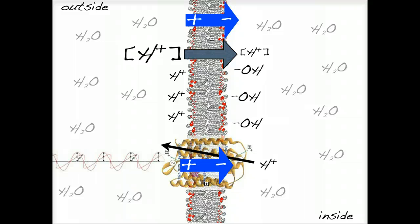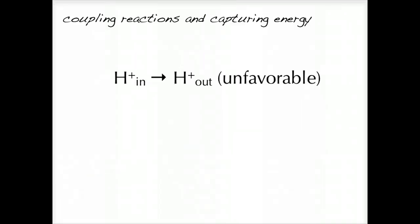Now let's look at how an electrochemical gradient can drive chemical reactions. If we start at the ground state, the movement of a hydrogen ion out of the cell is an unfavorable reaction, but we can make it favorable by adding energy.